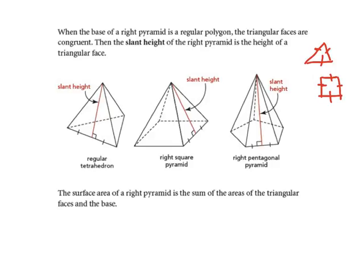The slant height of the right pyramid is the height of a triangular face — take a look at the red lines. The surface area of a right pyramid is the sum, meaning addition, of the areas of the triangular faces and the base.